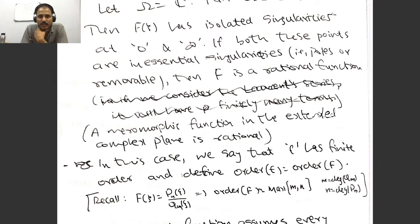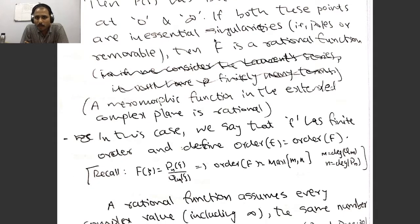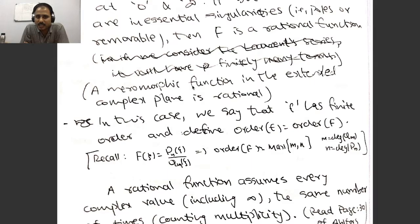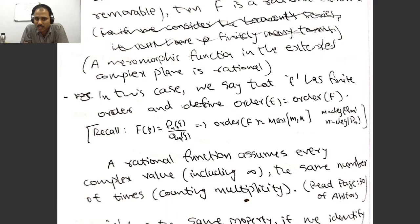Now let us consider a special situation. Suppose Ω is the whole complex plane, then Ω' is ℂ minus {0}. Then F(ζ) has isolated singularities at 0 and infinity. In the special case where both singularities are non-essential — either poles or removable singularities — a meromorphic function on the extended complex plane is rational. Therefore capital F becomes a rational function. For a rational function p(z)/q(z), the order is defined as the maximum of the degrees of p and q, and we define the order of small f to be the order of capital F.